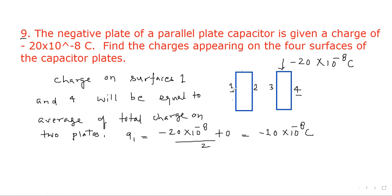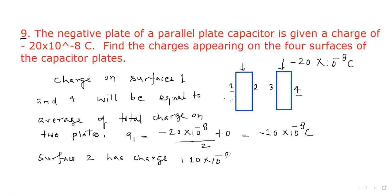Since this plate has zero charge, on this surface it is minus 10 into 10 to the power minus 8 Coulomb. Net charge on plate number one must be zero. Now due to induction, surface three will have opposite charge to surface two.